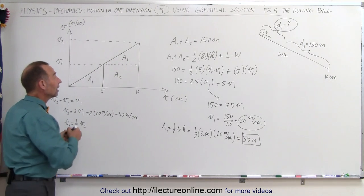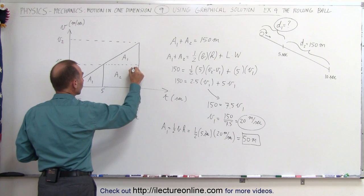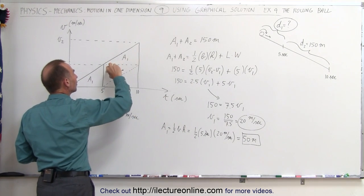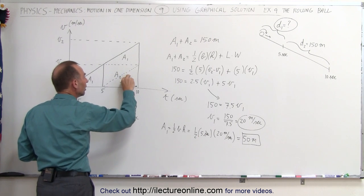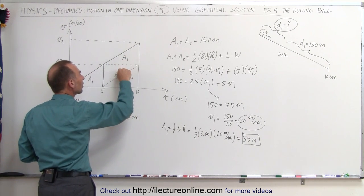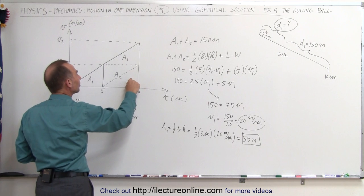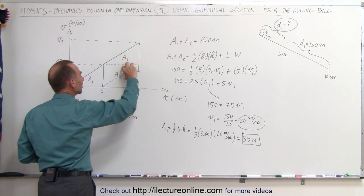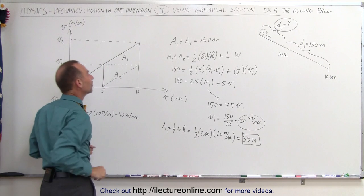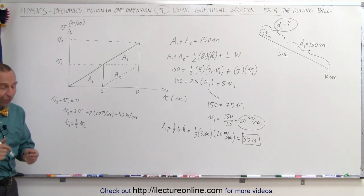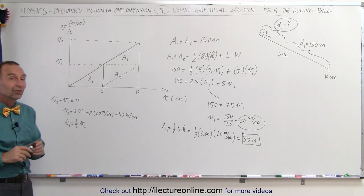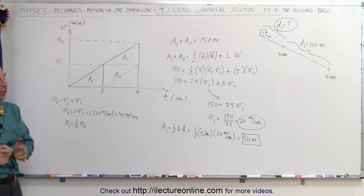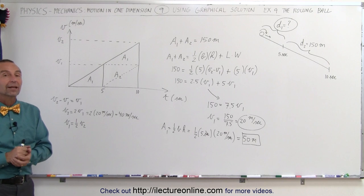Another way of looking at it: if you draw a diagonal line through Area 2, you can see that Area 1 appears three times. So the second five seconds covers three times the distance of the first five seconds. Since the second interval is 150 meters, that's three times 50 meters, which checks out. The graphical method can show you sometimes very tricky and easy ways to find a solution that otherwise would take a lot of mathematics.